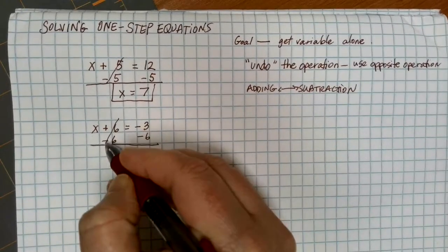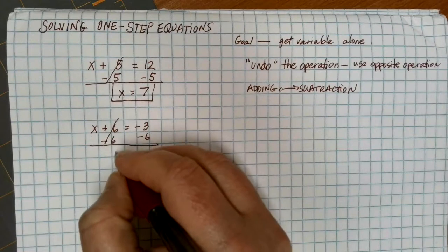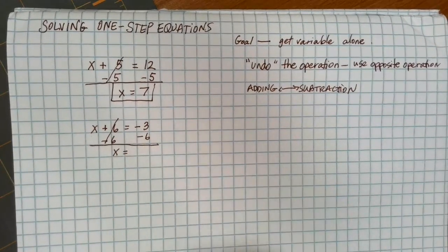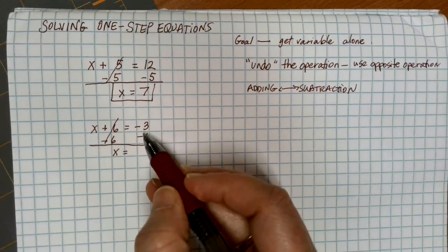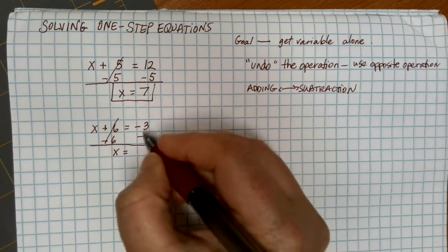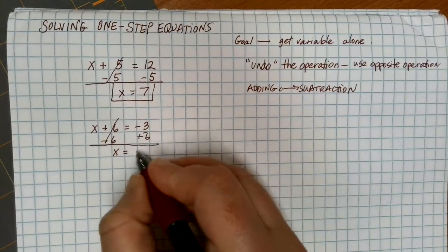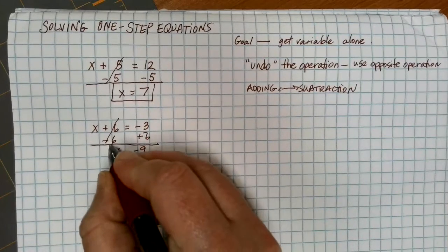Here, the plus 6 minus 6 undoes each other and leaves me just with the x. And on the other side, I have to do negative 3 minus 6, or negative 3 plus negative 6, if you want to think of it that way, and I should get negative 9.